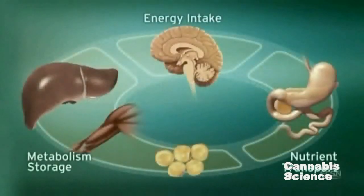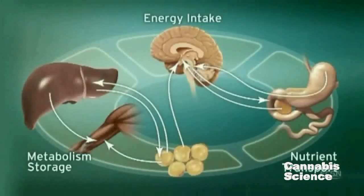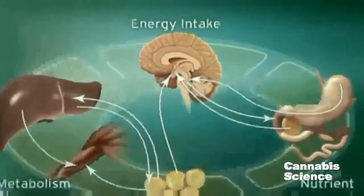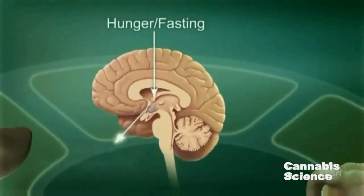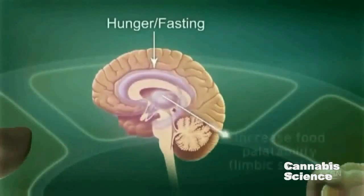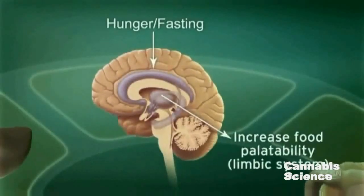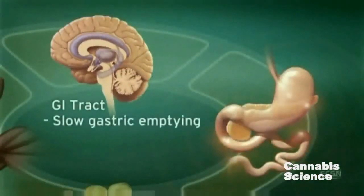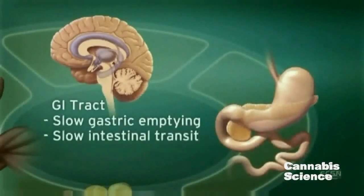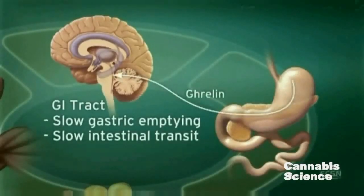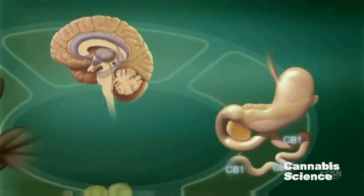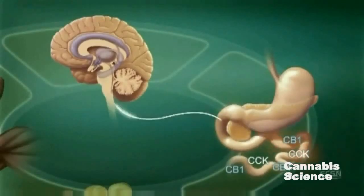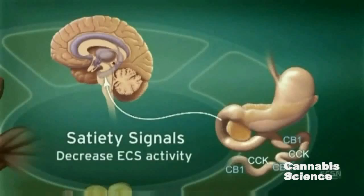Endocannabinoid system activity in the central nervous system regulates food intake. ECS stimulation by hunger and fasting signals stimulates appetite and increases the palatability of food. Endocannabinoids slow gastric emptying and GI transit and appear to stimulate secretion of ghrelin, a neuropeptide that increases appetite and food intake. After eating, cholecystokinin in the duodenum triggers satiety signals, subsequently decreasing ECS activity through suppression of CB1 expression.